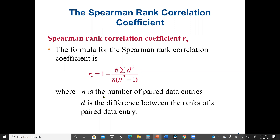Where N is the number of paired data entries, and D is the difference between the ranks of each paired data entry. That's why the test is called the rank correlation coefficient — we are going to find the rank based on the data set given to us.